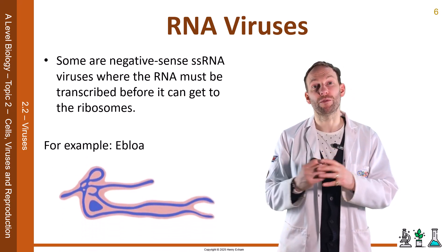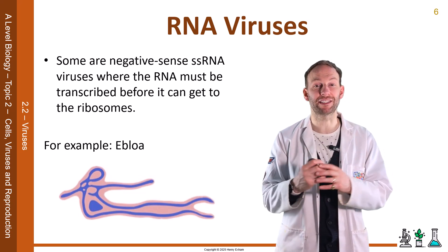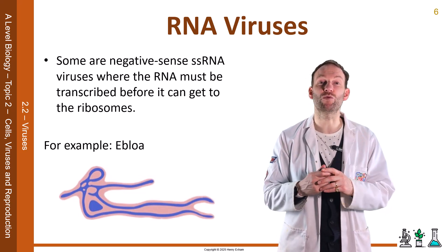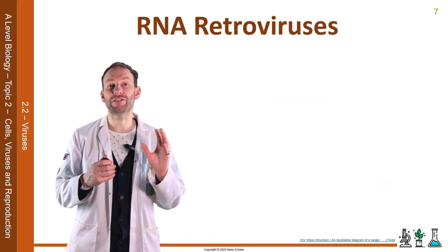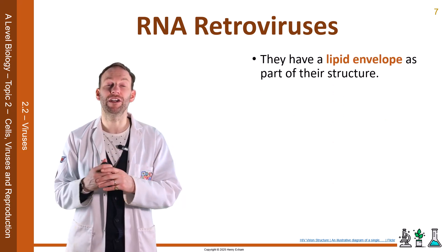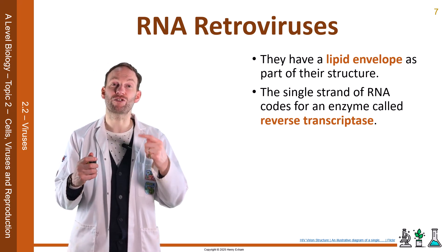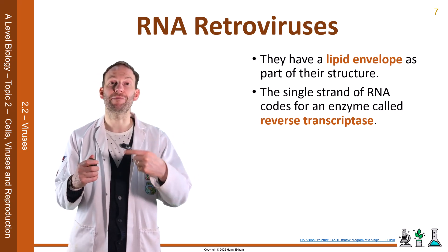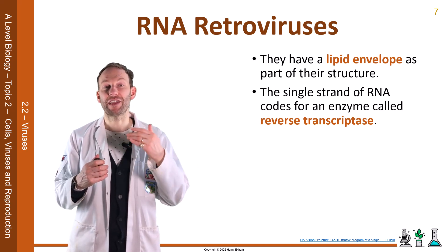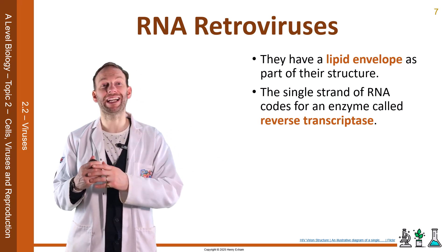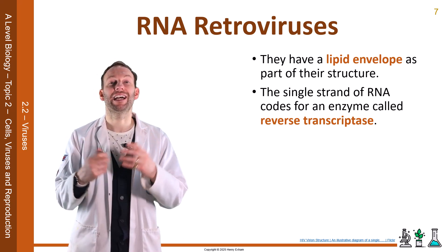Ebola is spread from person to person via direct contact with bodily fluids, such as blood. The final type of virus to discuss here are the RNA retroviruses. These have a lipid envelope as part of their structure. The single strand of RNA codes for an enzyme called reverse transcriptase. This reverse transcriptase makes viral DNA because it does transcription in reverse — it takes RNA and turns it back into DNA. That viral DNA can then be incorporated into the host's DNA, which will code for the viral proteins and RNA.